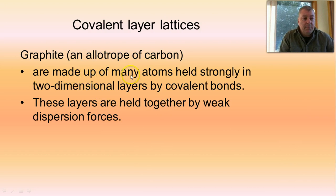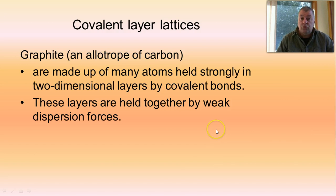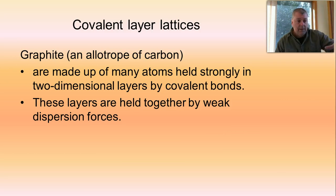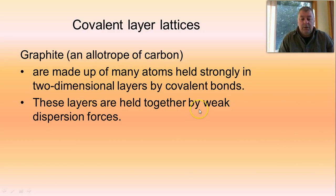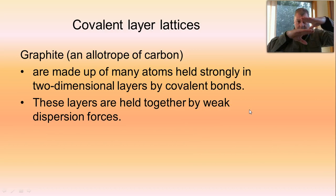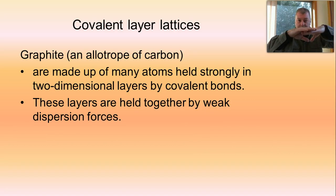Graphite is made up of many atoms held strongly together in two-dimensional layers of covalent bonds. Two-dimensional means that all the covalent bonds are in a plane. These planes of covalent bonds are referred to as the layers — hence the name layer lattice — but the layers are held together by very weak dispersion forces. So you have a layer, then another layer, with very weak forces between them, but very strong bonds within the planes.